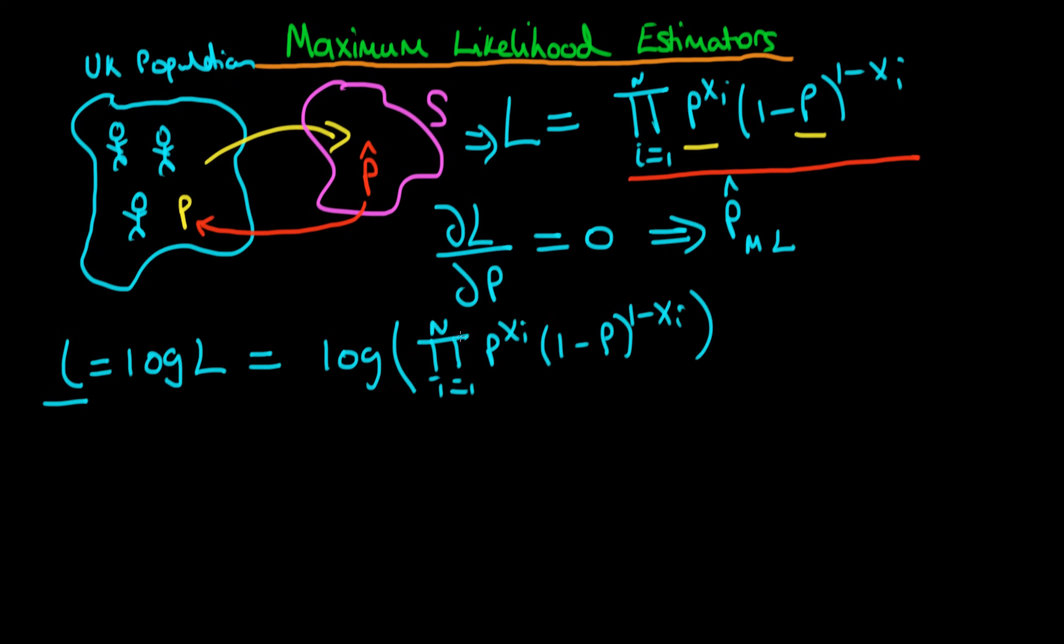Okay, so what are we actually going to do from here? Well it turns out that if I differentiate the log likelihood with respect to the parameter P and set that equal to 0, then that actually gives me the same estimator for P that we would have obtained if we just differentiated the likelihood rather than the log likelihood.